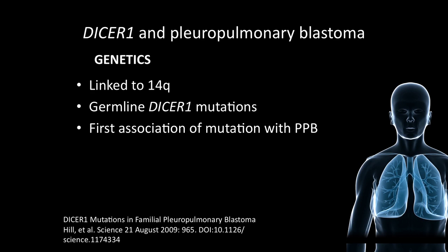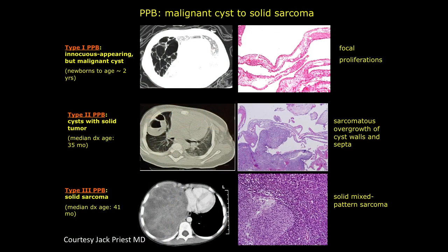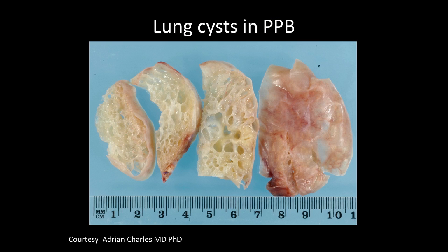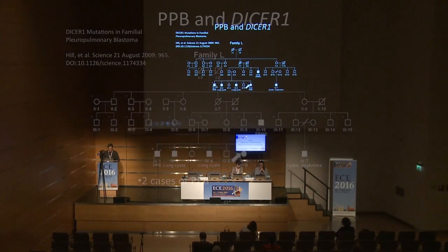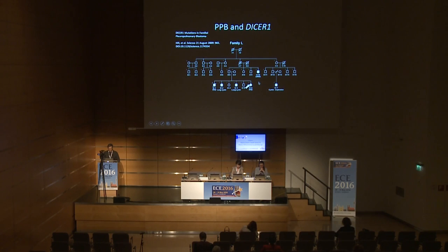These cysts start off as benign-looking but actually malignant cysts, then become solid, and then completely solid. This progression happens over time, with mean ages older as you go from benign cyst to malignant. The pedigrees are interesting because of the many people who carry the mutation but don't have the disease — unaffected parents and grandparents, but a child with rhabdomyosarcoma carrying the mutation. There are many cases of non-penetrance, which is probably why it took a while to find the syndrome.